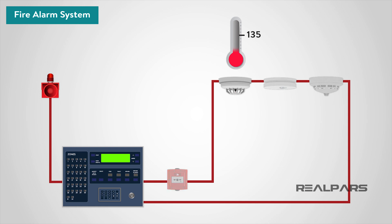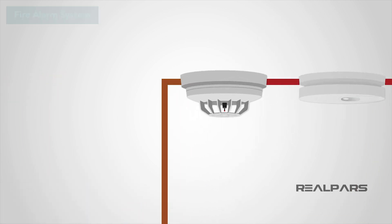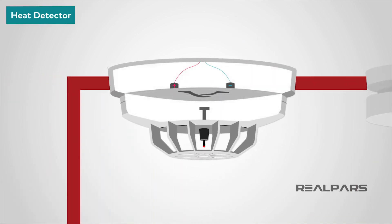A heat detector can either work on a fixed temperature basis where it will trigger an alarm if the temperature exceeds a preset value, or they can work on the rate of change in temperature. Commonly, heat detectors work in a similar way to an electrical fuse. The detectors contain a eutectic alloy which is heat sensitive. When a certain temperature is reached, the alloy turns from a solid to a liquid, which in turn triggers the alarm.